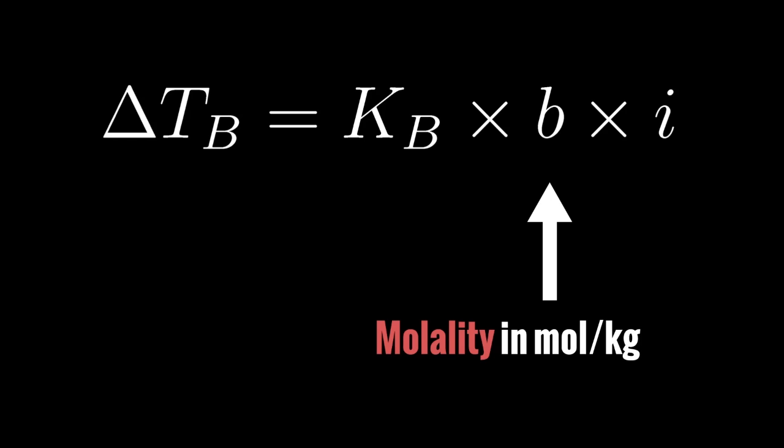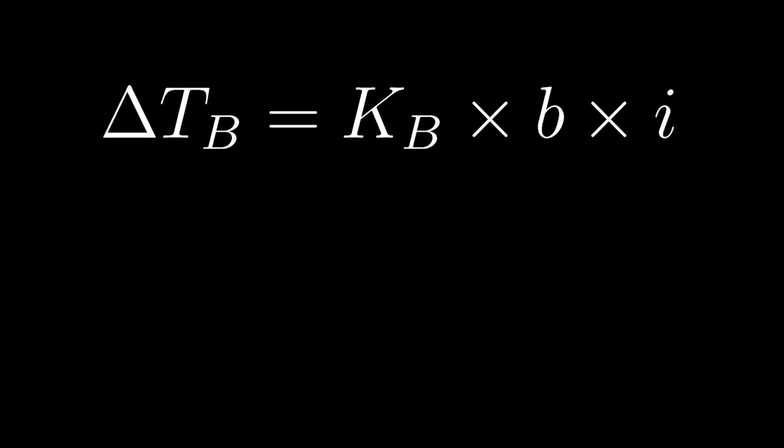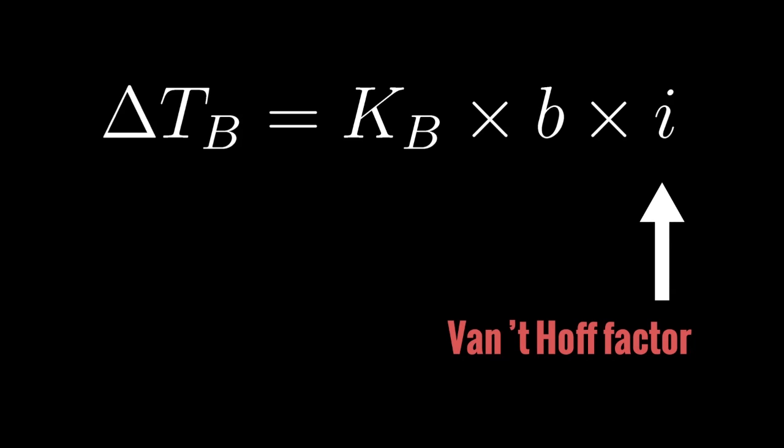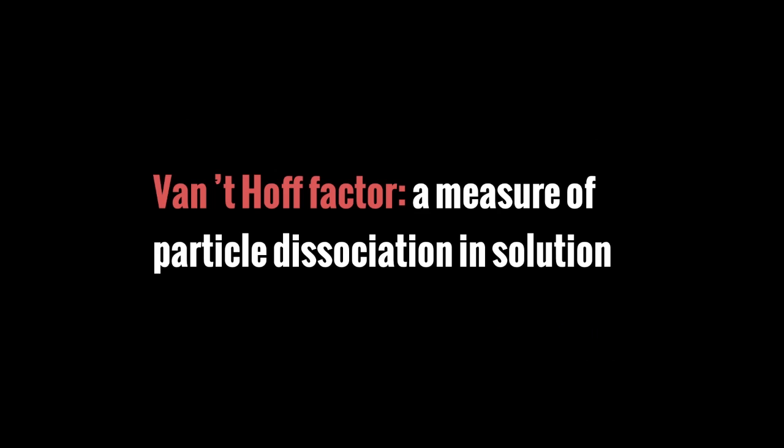Next we have the molality. We talked about molality in a previous podcast on measuring solute concentrations. It's measured in moles per kilogram — that is, the moles of solute divided by the kilograms of solvent. Then we multiply that by the Van't Hoff factor, which is just a measure of particle dissociation in the solution. But you already know that because you watched our Freezing Point Depression podcast.